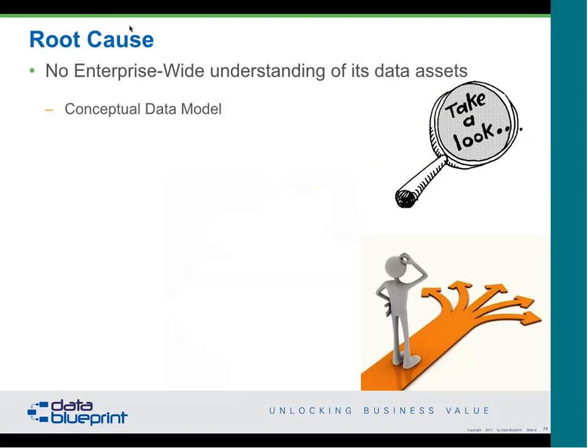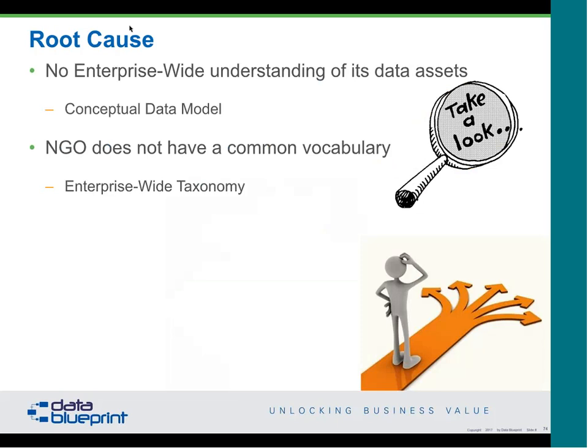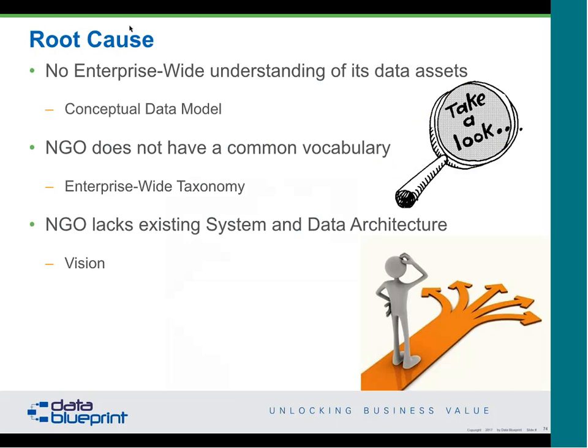We took the first step back: what was the root cause? We found there was no enterprise-wide understanding of data assets. They lacked a conceptual data model. They didn't have a common vocabulary — if you said the word 'project' to Peter, he'd tell you one example; go to Mike and he'd give a completely different meaning, which is a problem if you need to report on projects. They lacked existing system and data architecture, and really lacked an overall vision. The vision they had was not aligned with their business model. And, of course, the shiny object syndrome — if they saw a tool that looked like it might work, they'd buy it without looking at whether the data actually fit within the organization. That led to minimal integration across the enterprise.